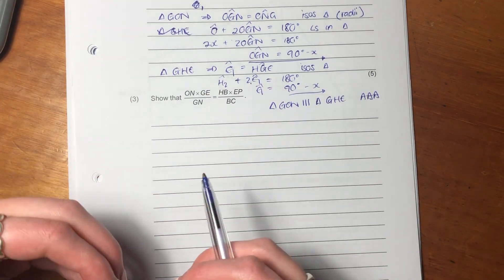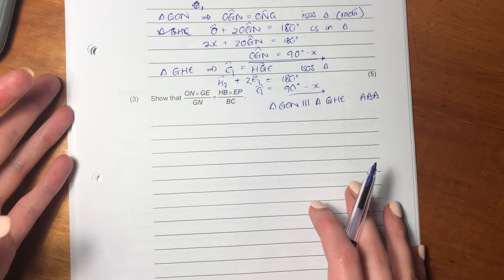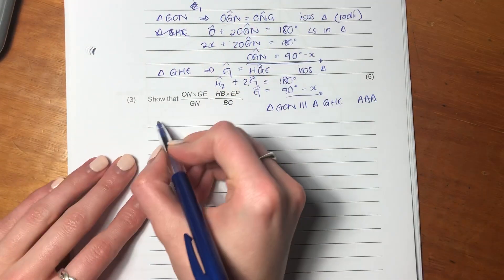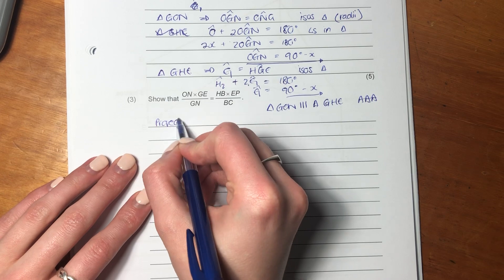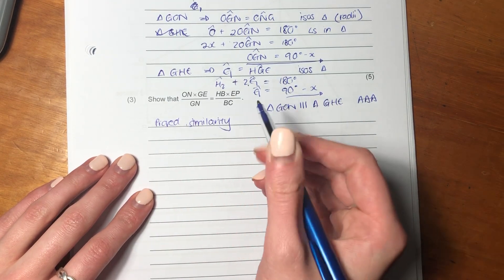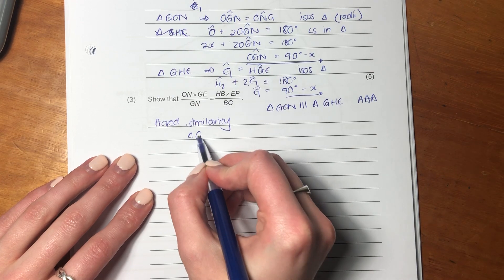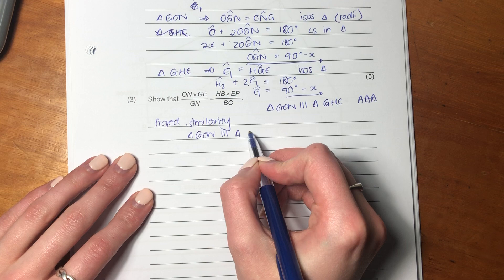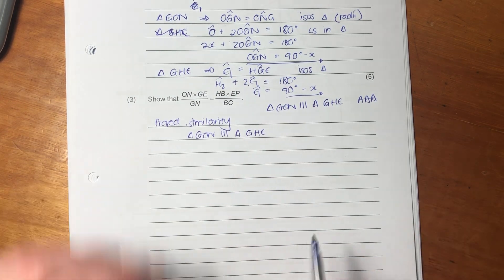But let's go back and see what we actually have in our diagram. We've just proved similarity. So we know that triangle G-O-N is similar to triangle G-H-E.